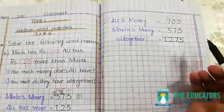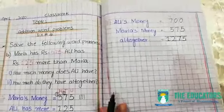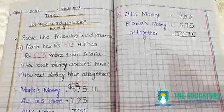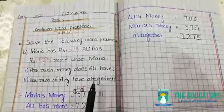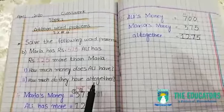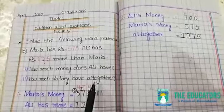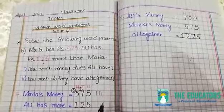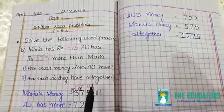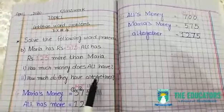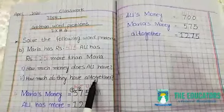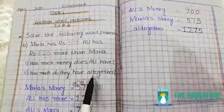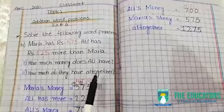1275 rupees. Ab aapko is question ka kaise pata chala ki addition ka hai? Aapko pata hai na aapko question mein kaun-kaun se words use hote the: join, add, all together, how much, how much money, how many. Toh yeh dekha — aapko pata chal gaya is question mein addition ki problem hai, so addition humne solve kiya.